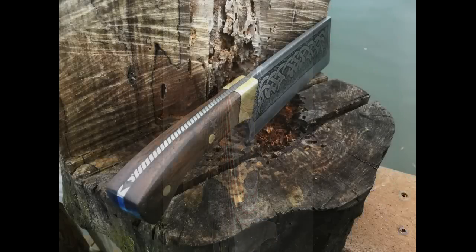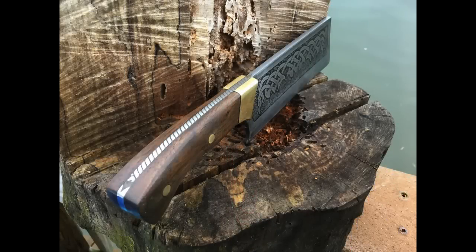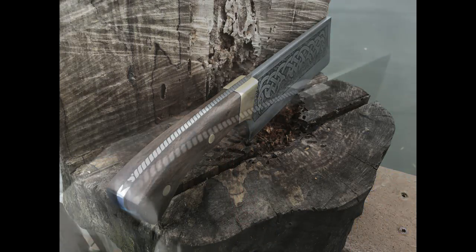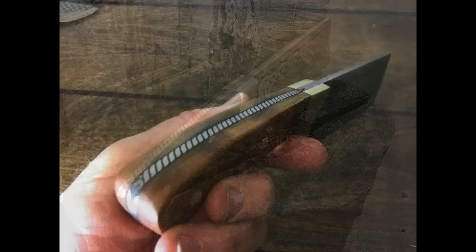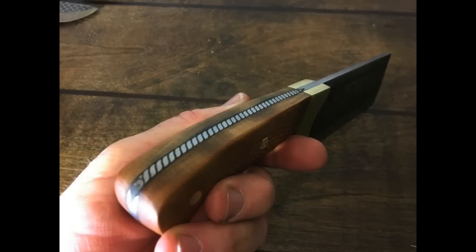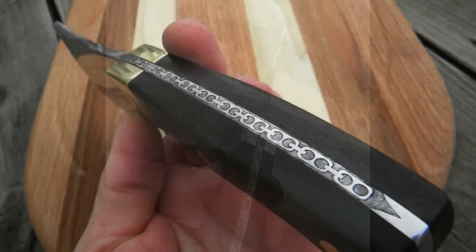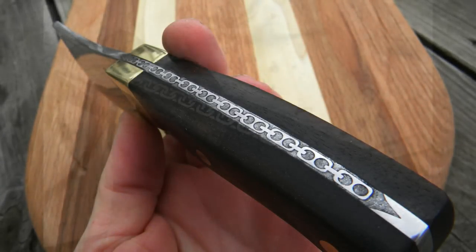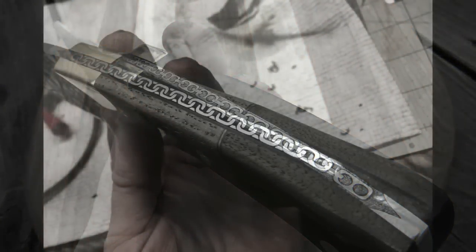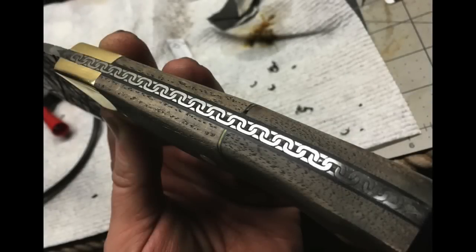I've done stars and a rope pattern. The rope was on these Celtic cleavers that I had done. I've done a couple of different chain patterns. One was a nautical chain. And then probably my favorite so far to date would be this three-dimensional chain links.